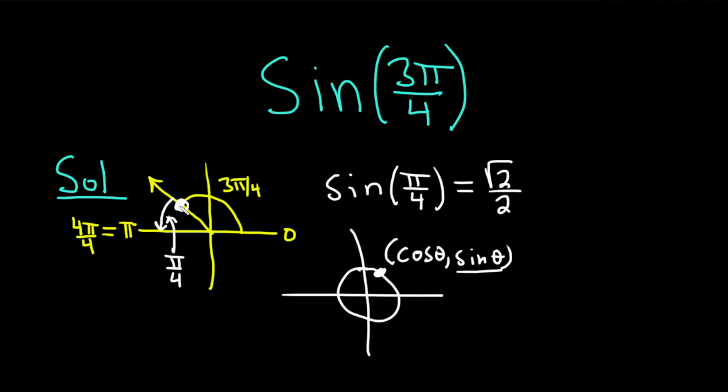And so sine is the y-coordinate on the unit circle. So we're over here. So the y-coordinate is still positive. So sine is positive. So this is just square root of 2 over 2, and it will remain positive.